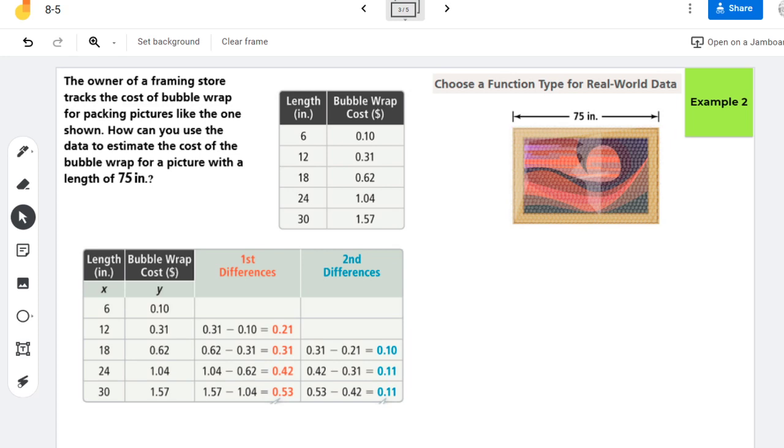All right, so what we're going to do is look at this set of data. We're going to try to figure out a function that would best model that data and then use it to help the owner of this framing store track the cost of bubble wrap. This is how we make some approximations which helps in business all the time.